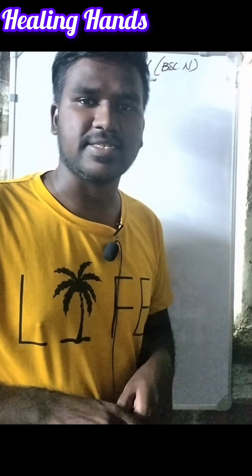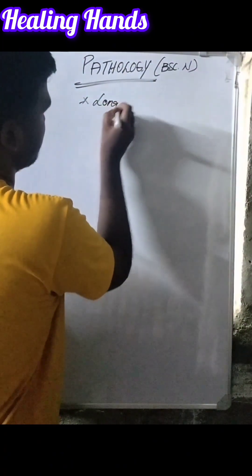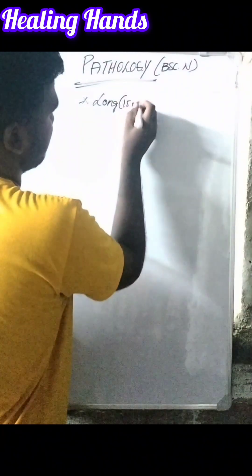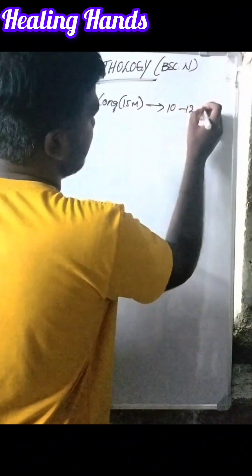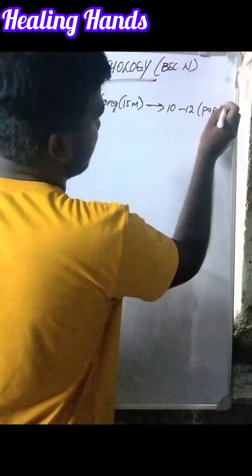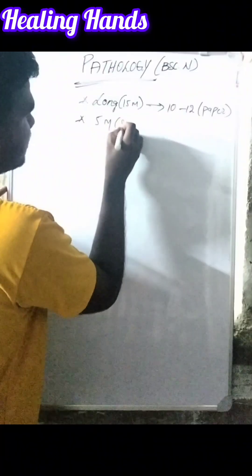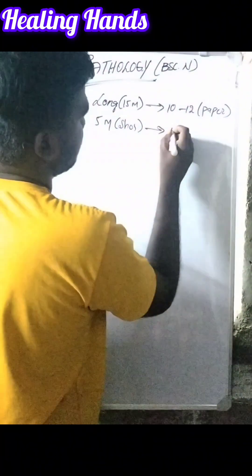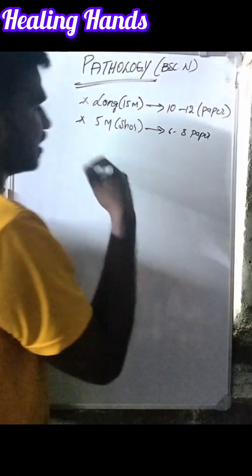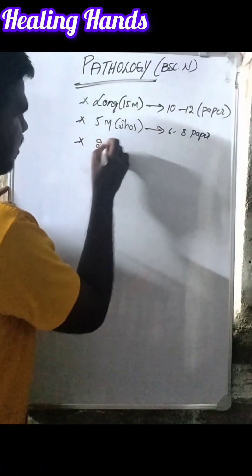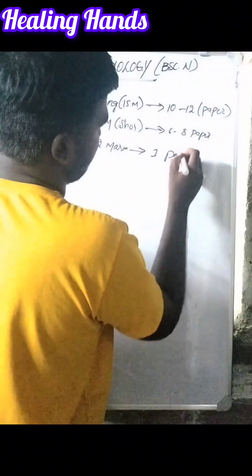Before starting the examination we should know how many pages or papers we should write. For a long answer that is 15 marks, we should write up to 10 to 12 pages. If it is for 5 marks, that is a short answer, we should write up to 6 to 8 pages. If it is for a two marks answer, we should write one page.